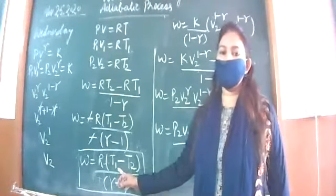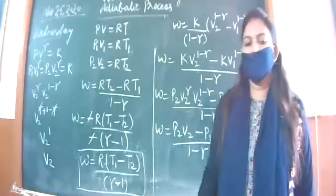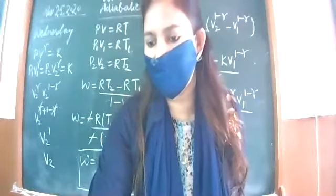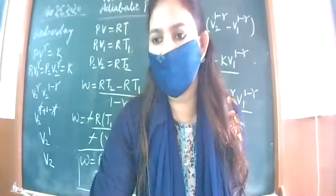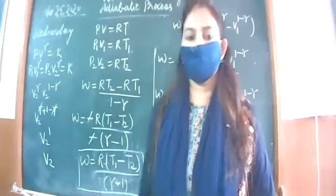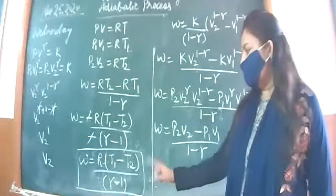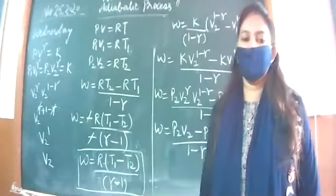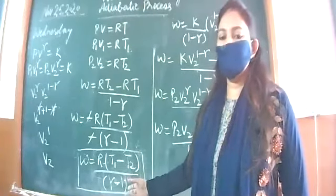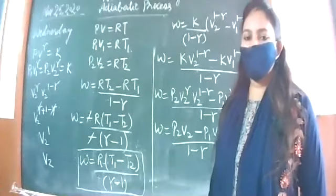Remember: T1 is initial temperature and T2 is final temperature, so the difference is initial minus final. We write gamma minus 1 in the denominator because we took negative out and cancelled. This is the most acceptable form of the formula. Any doubt?